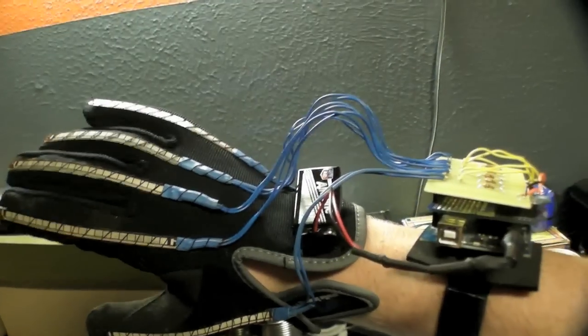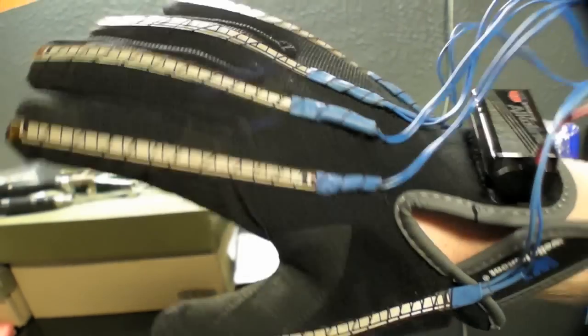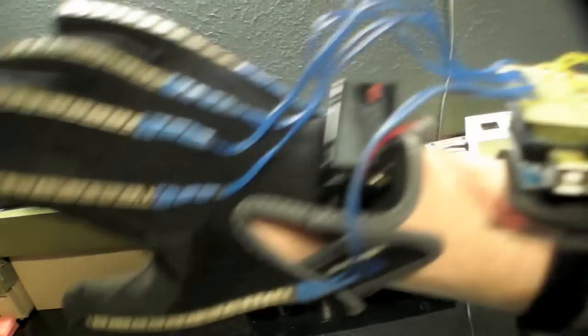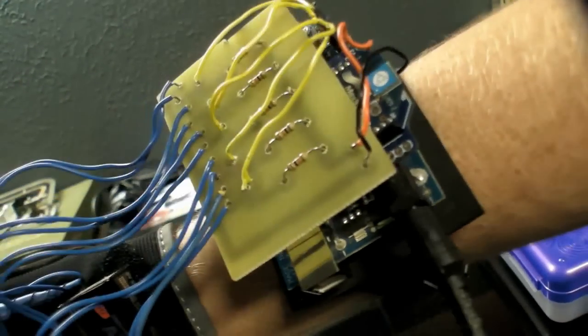So now here's the control glove. This glove is actually, really anybody could wear it. It's elastic, so really anybody could operate this. Here's the 9-volt battery, which powers this Arduino and the XB.